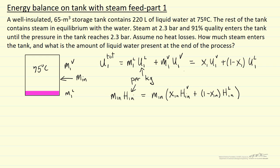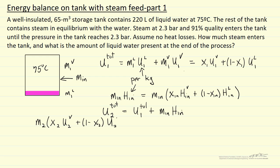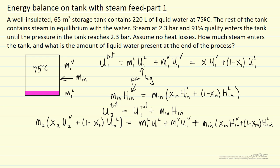When we have a fixed container where we're adding energy, we use internal energy for the system. The final energy U2_total equals the initial internal energy plus the energy we add, giving us our energy balance. The final internal energy is expressed in terms of quality: total final mass m2 times final quality x2 times internal energy of vapor per kilogram, plus one minus x2 times internal energy of liquid. We know the internal energies from the steam tables, and we know the initial conditions and incoming enthalpies.